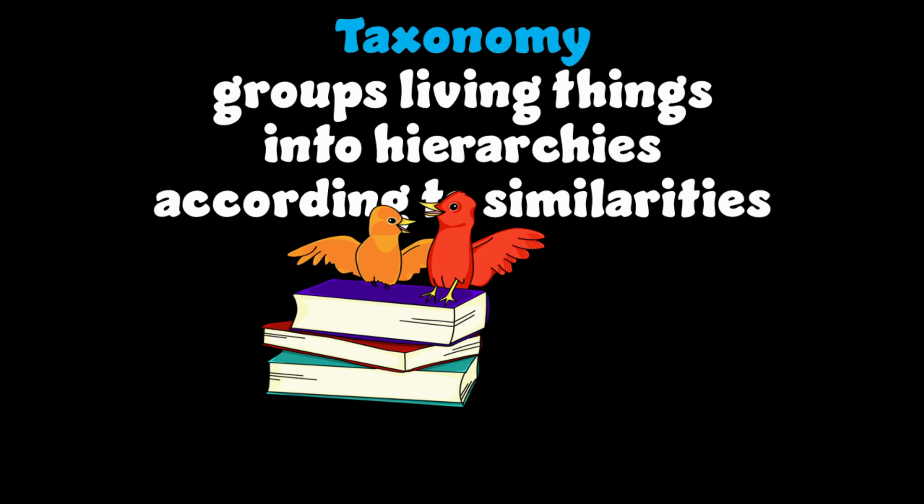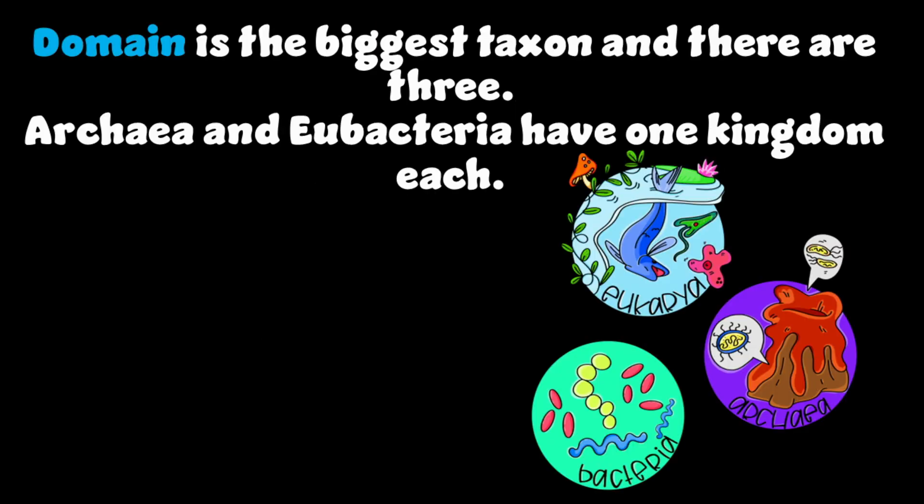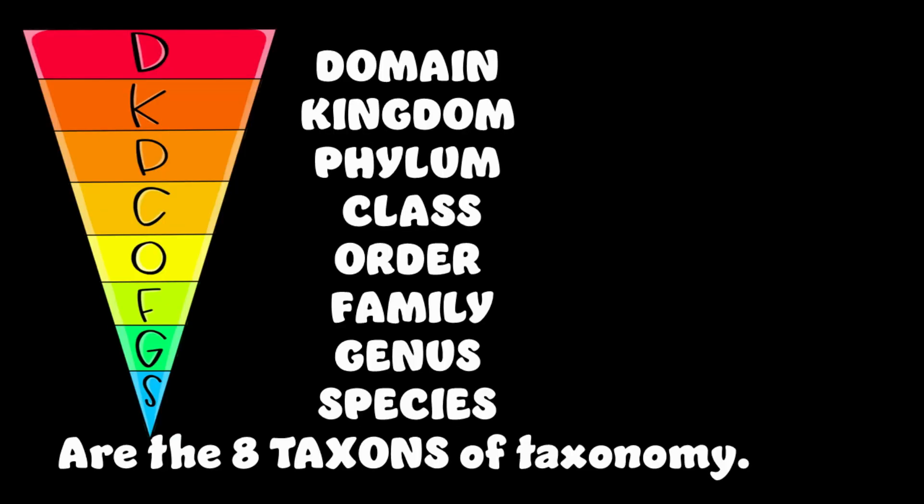Taxonomy groups living things into hierarchies according to similarities. Domain is the biggest taxon and there are three. Archaea and Eubacteria have one kingdom each. Domain, Kingdom, Phylum, Class, Order, Family, Genus, Species — these are the eight taxons of taxonomy.